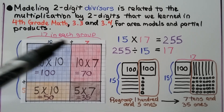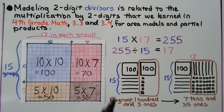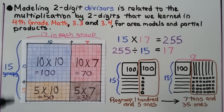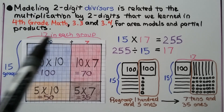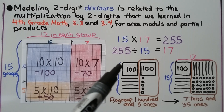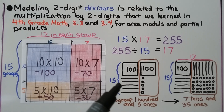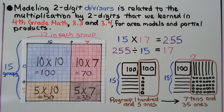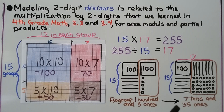That's a 10 plus 7 more, which makes 17. So for 255 divided by 15, we have 255 in all divided into 15 groups — there will be 17 in each group. We have 15 groups of 10. But for 255, we would still have a 100 and 5 ones left over, so we can regroup these as 7 tens and 35 ones, and it'll look like this.